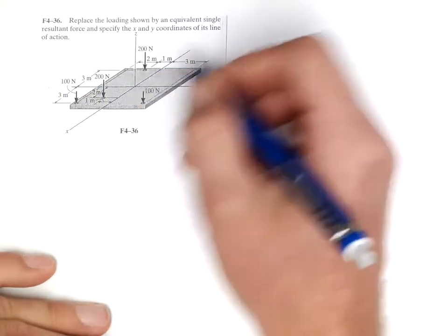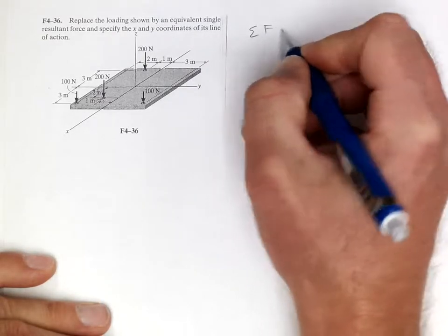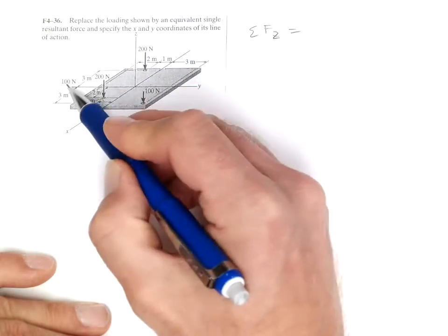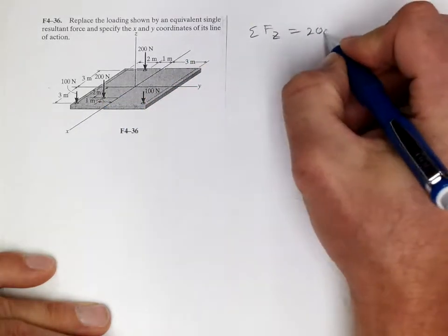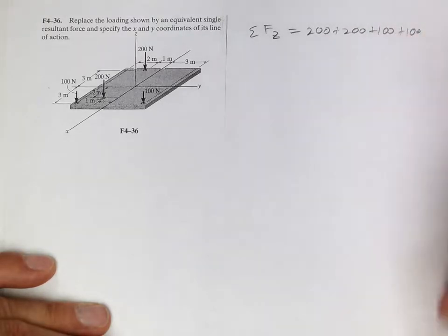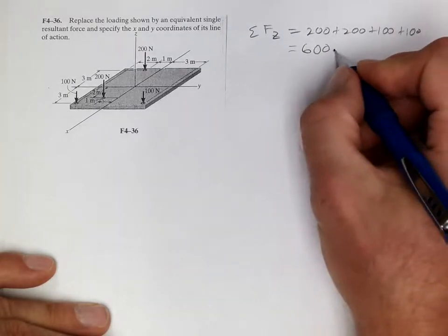So let's sum the forces in the z-direction. That equals 200 plus 200 plus 100 plus 100, and that equals 600 newtons.